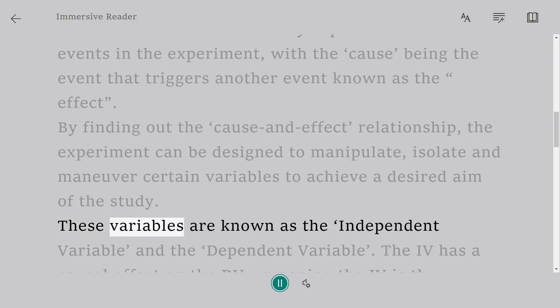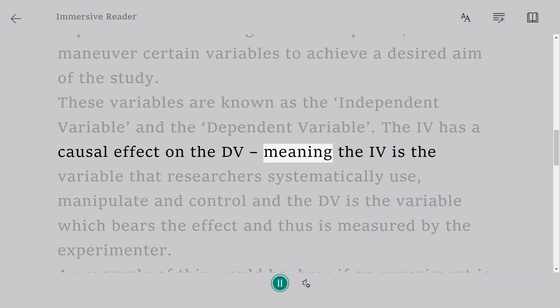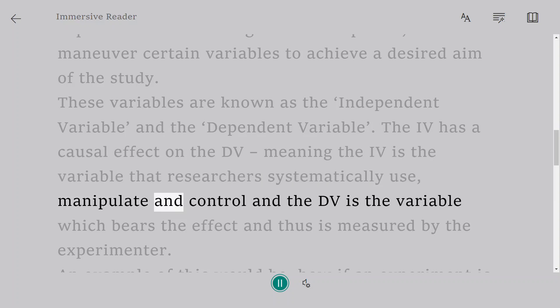These variables are known as the independent variable and the dependent variable. The IV has a causal effect on the DV, meaning the IV is the variable that researchers systematically use, manipulate and control, and the DV is the variable which bears the effect and thus is measured by the experimenter.